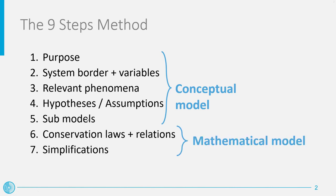We then enter the second phase of the method, whose aim is the definition of a mathematical model for the process under examination, or better, for each component we have decided to include in the system model. This operation consists of writing the equations necessary to describe the relevant phenomena in the identified submodels. Afterwards, the resulting mathematical formulation can sometimes be simplified to ease the implementation of the models.